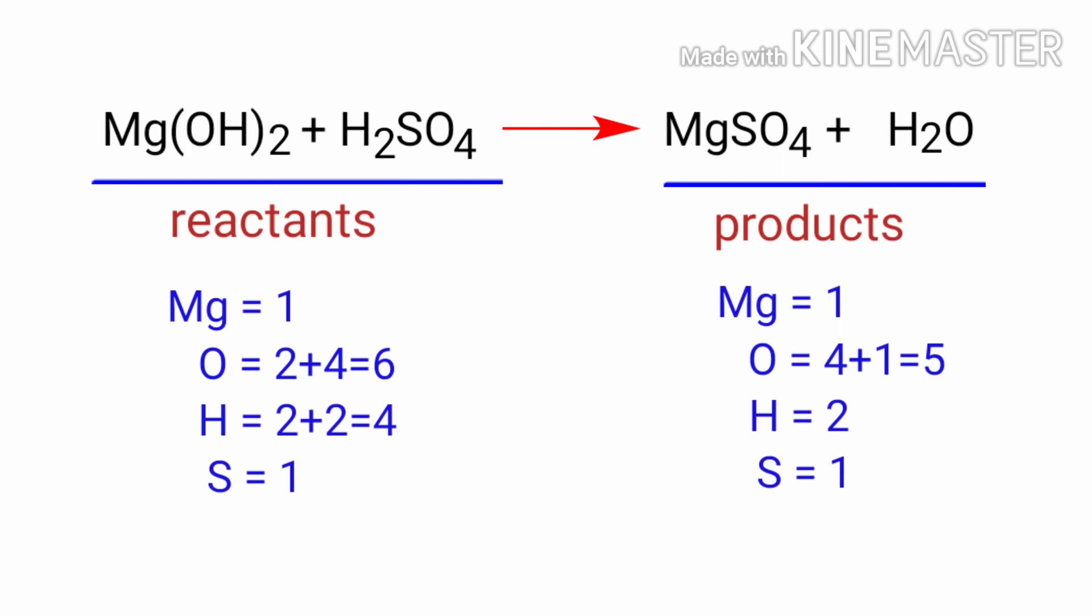If you look at this equation, the equation is not balanced. In the reactants side there are 1 magnesium atom, 6 oxygen atoms, 4 hydrogen atoms, and 1 sulphur atom present. On the products side there are 1 magnesium atom, 5 oxygen atoms, 2 hydrogen atoms, and 1 sulphur atom present.